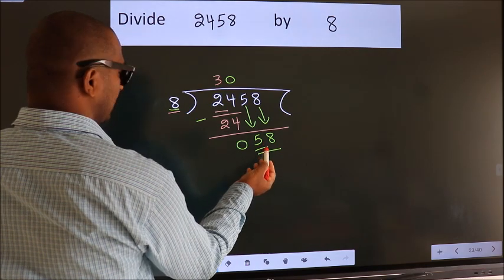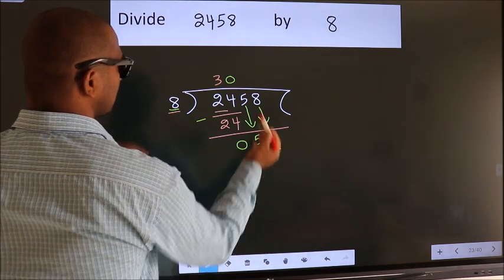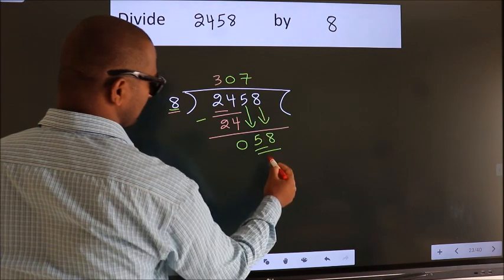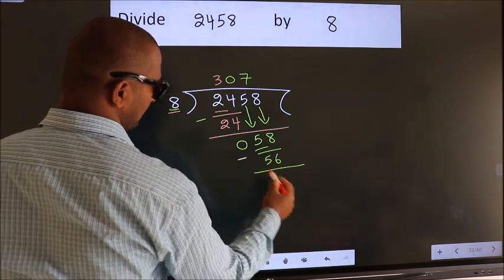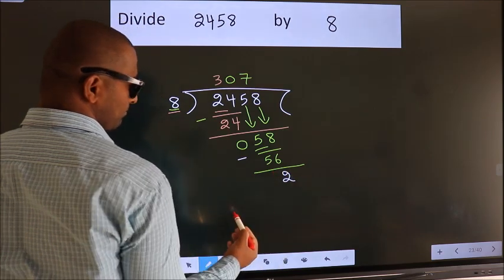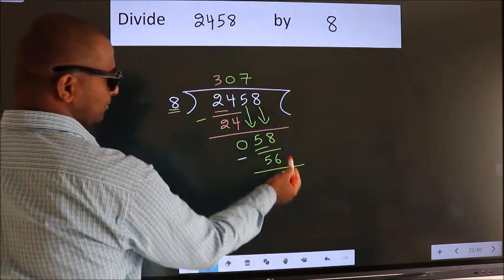A number close to 58 in 8 table is 8 sevens, 56. Now we subtract. We get 2. No more numbers to bring down.